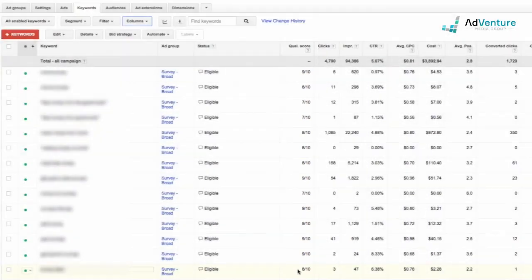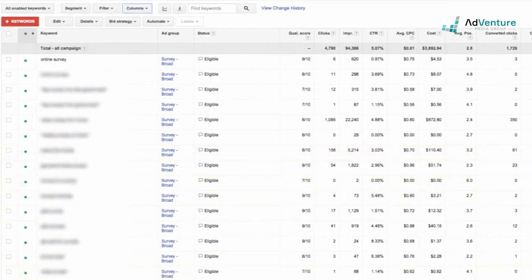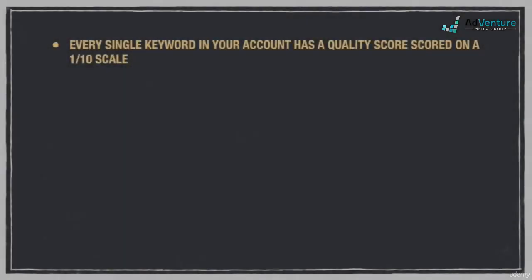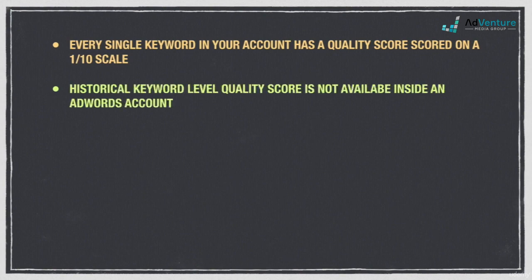We'll come back and spend a lot more time in the actual accounts later, but here's just an idea of where your quality score shows up and what it looks like. You cannot see historical quality score data from within your AdWords account — in other words, you can only see what your quality score is now, not what it was yesterday or how it changed over time. There are some great third-party tools and AdWords scripts that you can run to collect this data, and we'll talk more about that later on.